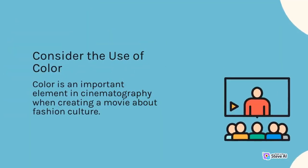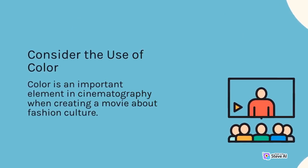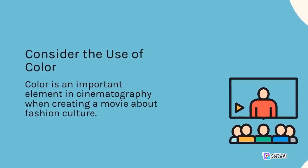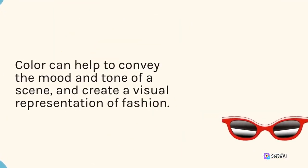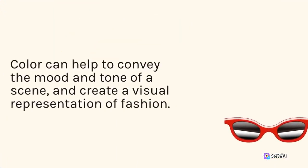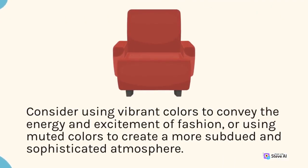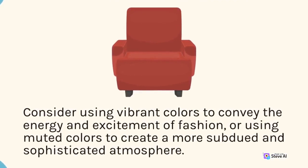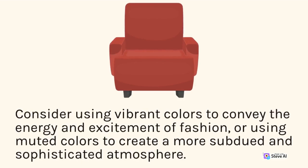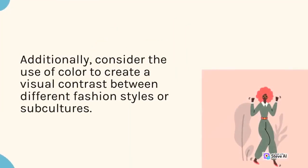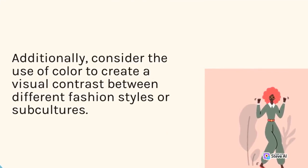Consider the use of color. Color is an important element in cinematography when creating a movie about fashion culture. Color can help to convey the mood and tone of a scene and create a visual representation of fashion. Consider using vibrant colors to convey the energy and excitement of fashion, or using muted colors to create a more subdued and sophisticated atmosphere. Additionally, consider the use of color to create a visual contrast between different fashion styles or subcultures.